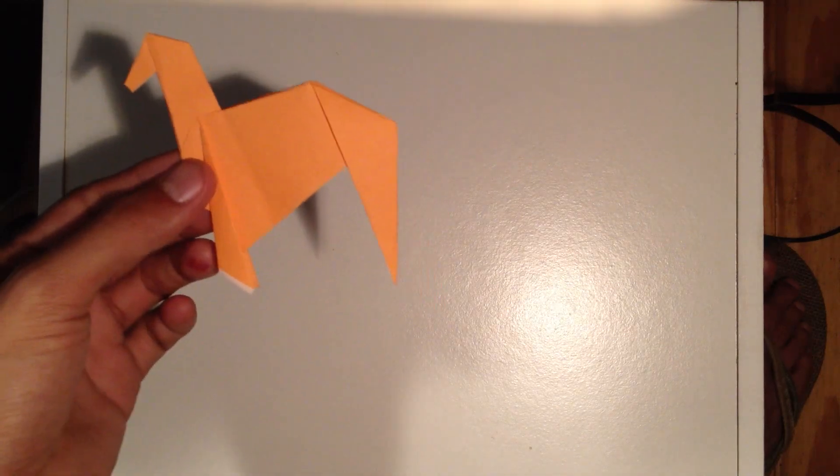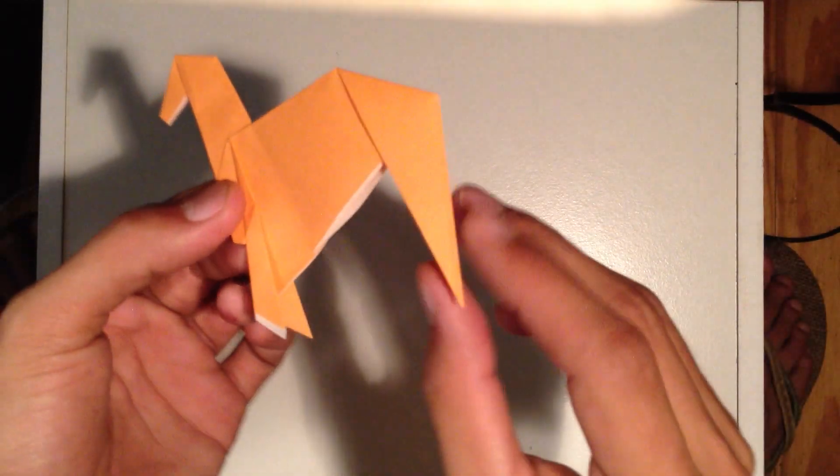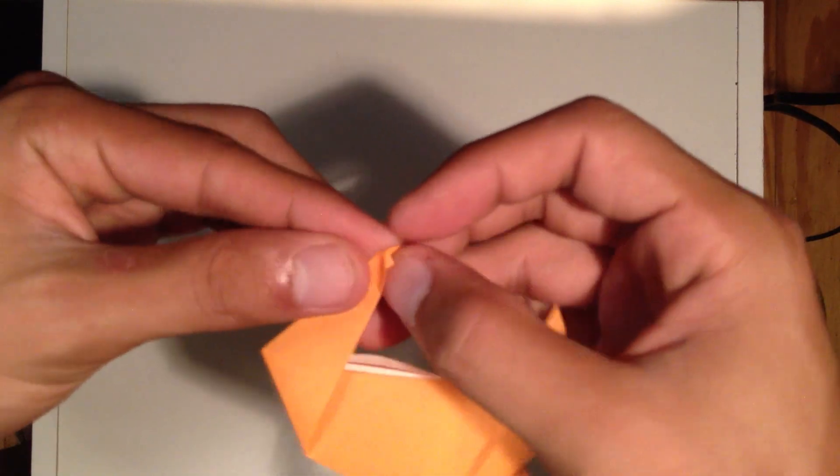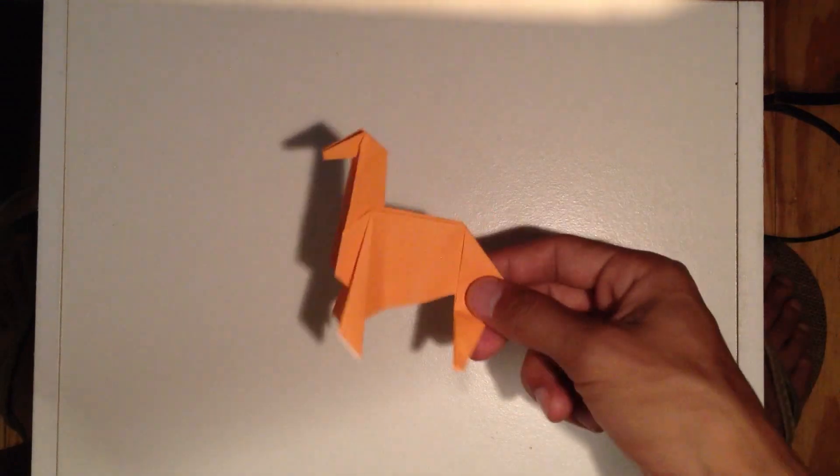So now we're left with this. And all we're really going to do next is just kind of flatten out the back legs so they're not so pointy. It should stand. And there we go.